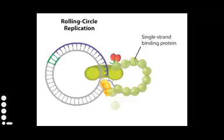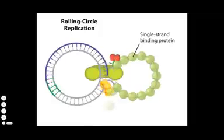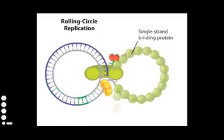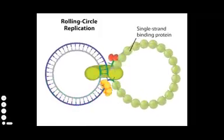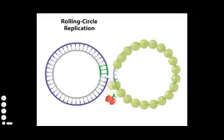As replication proceeds, the nicked strand, which continues to be covered with single-strand DNA binding proteins, progressively peels off until replication of the intact strand is complete. The two ends of the nicked single strand are rejoined by the RepA protein and released.